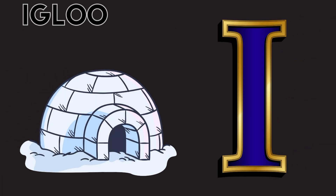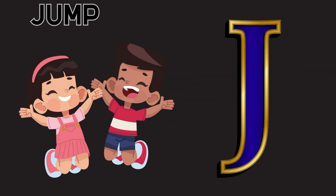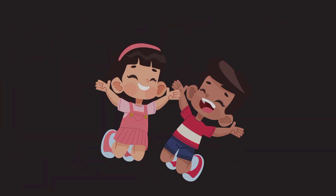I is for igloo, i-i-igloo. J is for jump, j-j-jump.